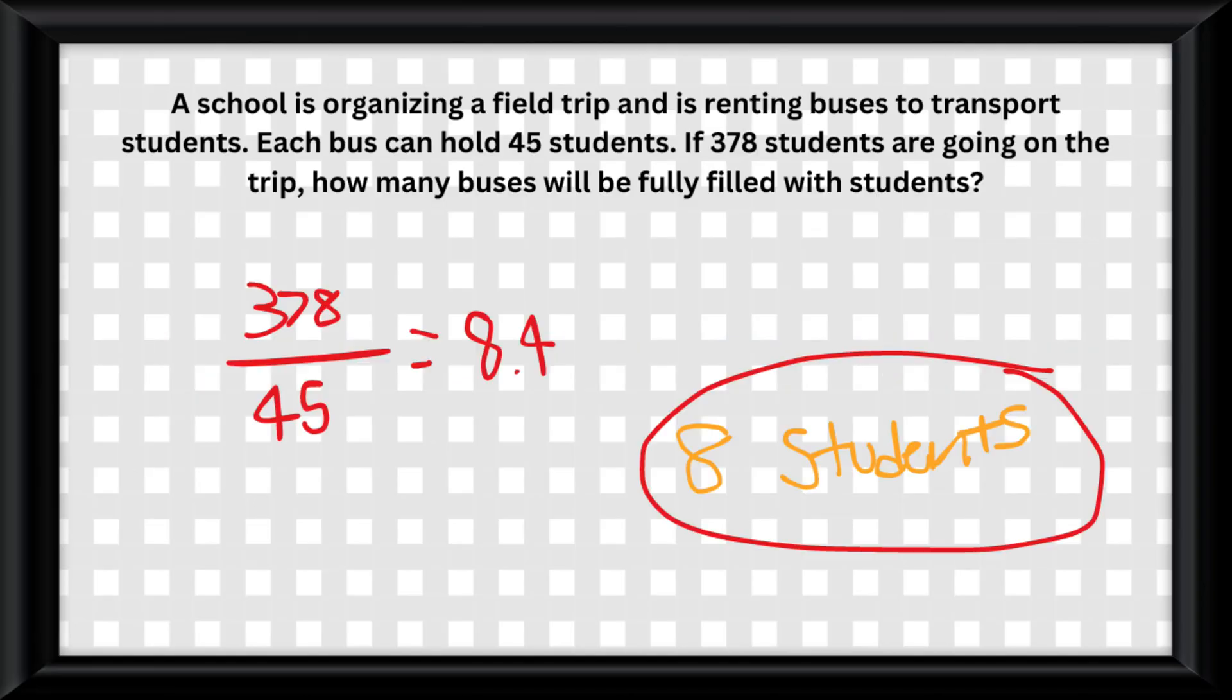Also remember to model each answer to the real world scenario given in the problem. For example, you can't have 0.5 people in a room or 0.7 printers. Because of this, some domain and range restrictions might exist in an equation.